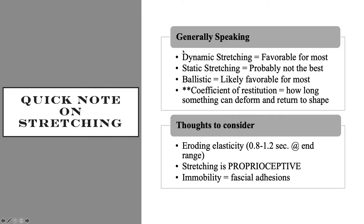Dynamic stretching is probably the favorable option for most; static stretching is probably not the best for most. Ballistic stretching is likely favorable for those who can do it correctly — we don't want to throw a 45–50-year-old who hasn't moved in three years into high-speed ballistic stretching. But for those who have reached that point, ballistic stretching is great. We want to look at the coefficient of restitution — how long something can deform before it's unable to return to its original shape.